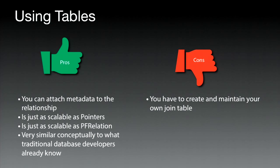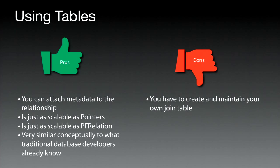Why use join tables? The pro is you can attach metadata to the relationship. It's just as scalable as pointers, and just as scalable as PF relation — because underneath the covers it really is the same thing. It's also conceptually similar to what many of us already know from traditional databases. The con is you have to manage your own join table when there's a really nice, shiny Parse relation you could use instead.